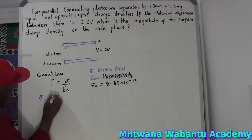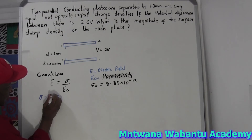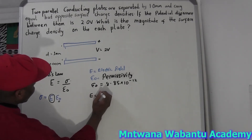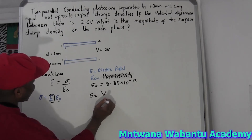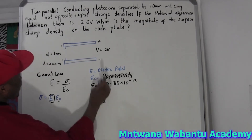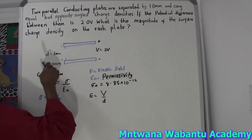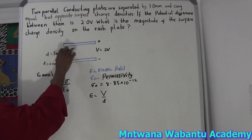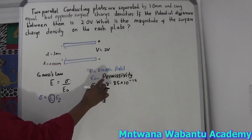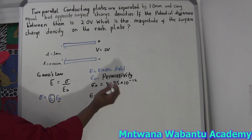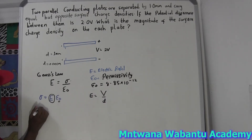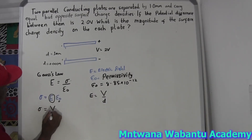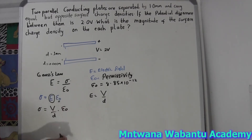The problem here is we don't have the electric field directly, so I need to find it. Electric field always equals potential difference over the distance of separation. So I'm going to substitute: surface charge density equals potential difference over distance of separation, times the permittivity.